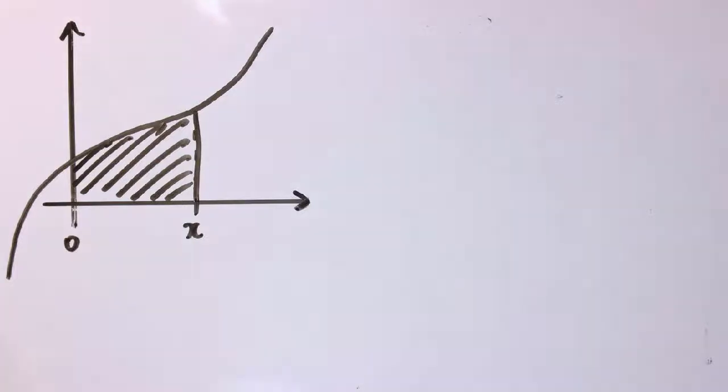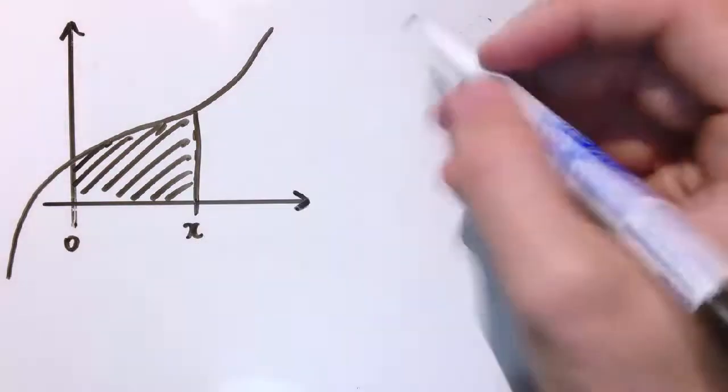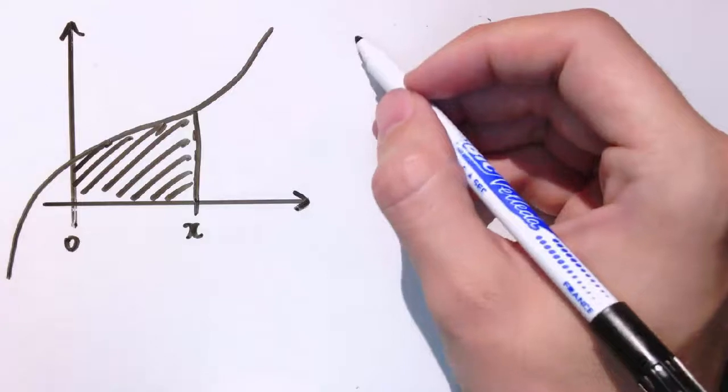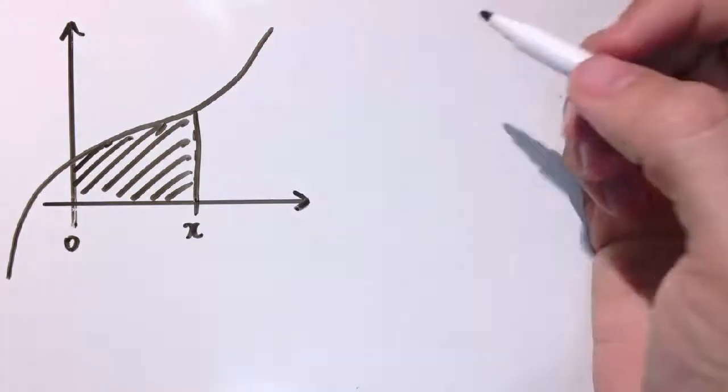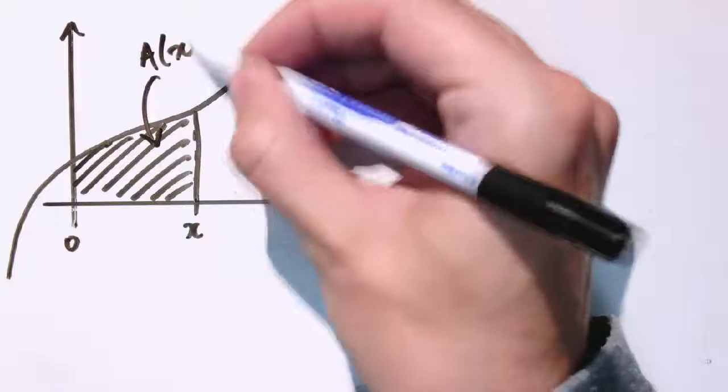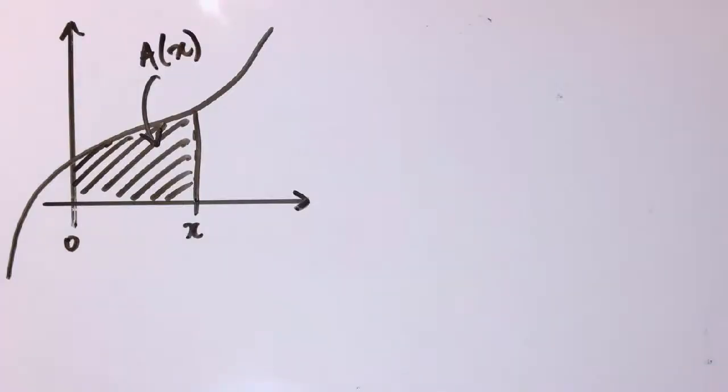Here we've got a general curve here and I'm going to go up to a point x here and I'm going to define a function which I'm going to call an area function. So this area in here I'm going to say is A of x. It's the area up to x.